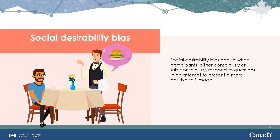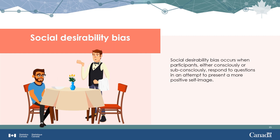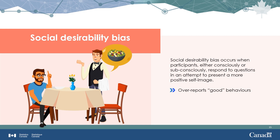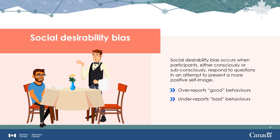Social desirability bias occurs when participants, either consciously or subconsciously, respond to questions in an attempt to present a more positive self-image. For example, someone might over-report good behaviors like the amount of exercise they do or fruits and vegetables they eat, or under-report socially undesirable behaviors like smoking.